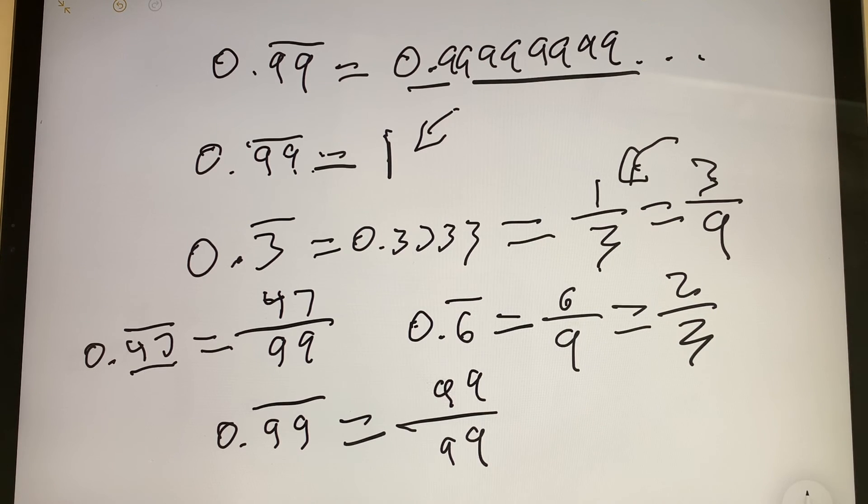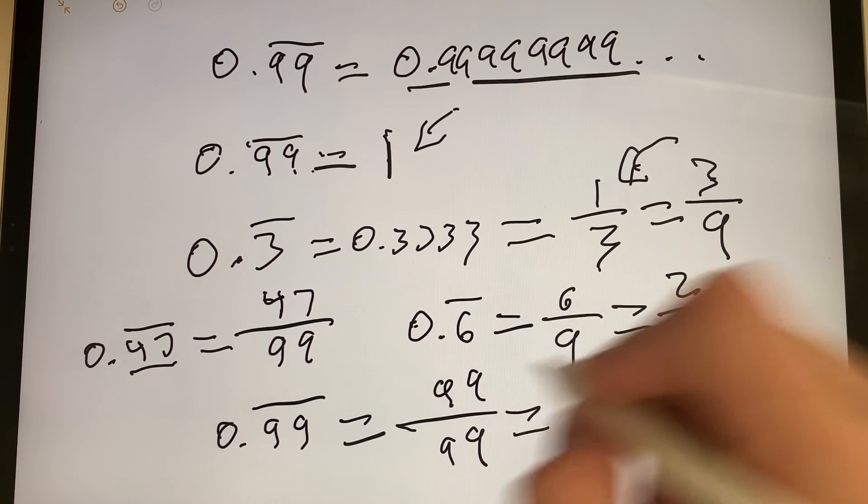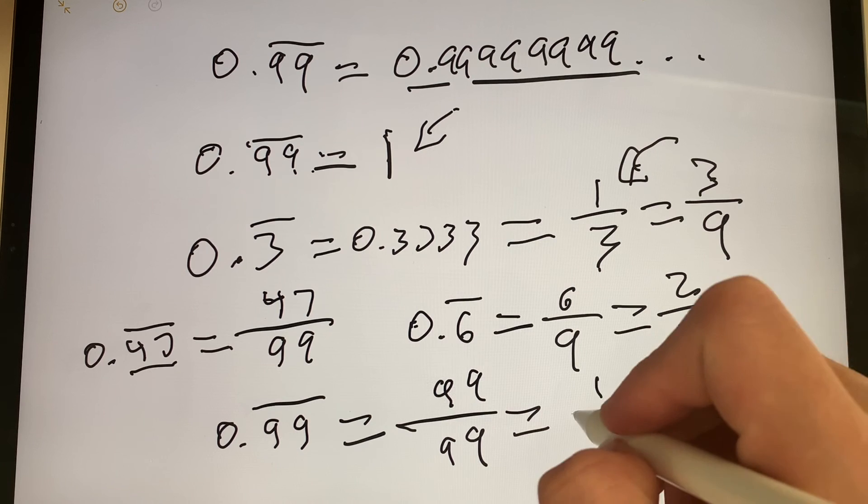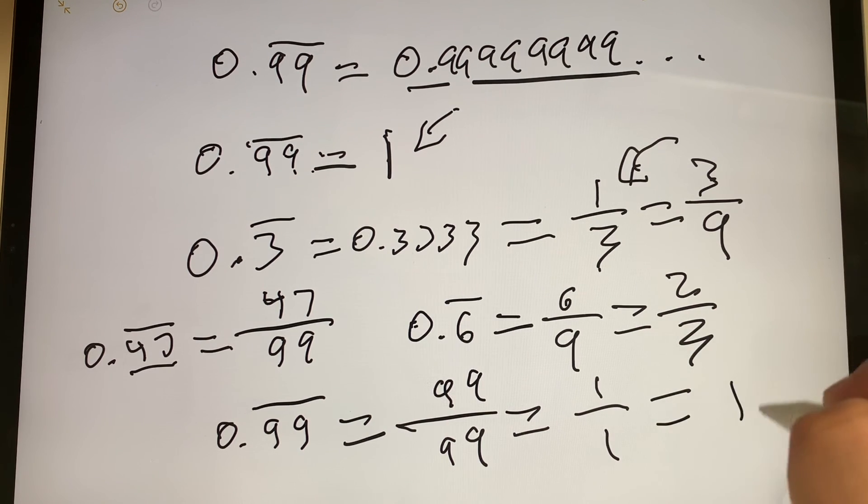Why? Because there are two 9s. So we put two 99ths. And 99 over 99 is equal to 1. That's equal to 1/1. So 0.99 repeating is equivalent to 1.